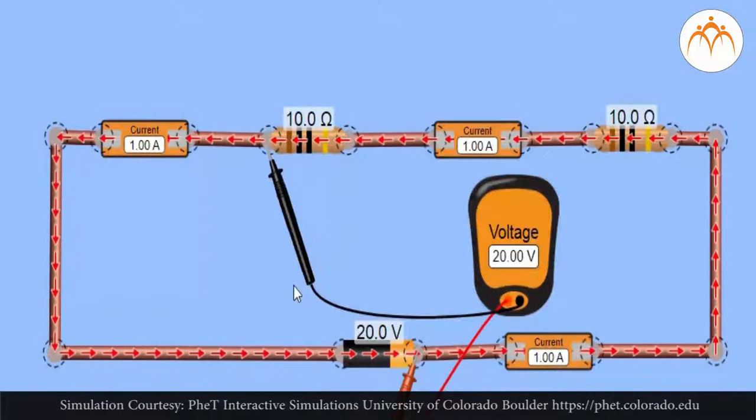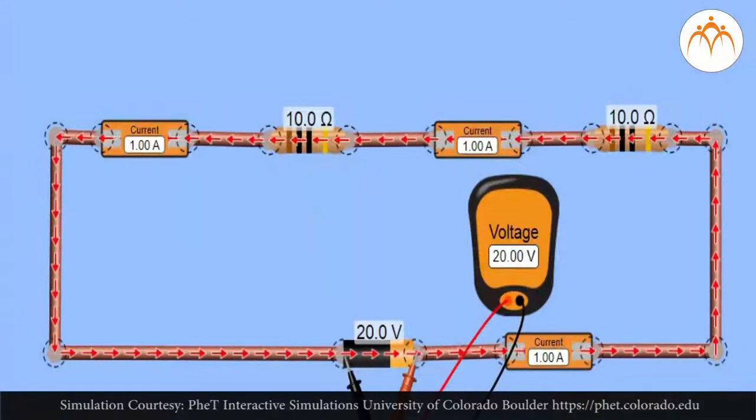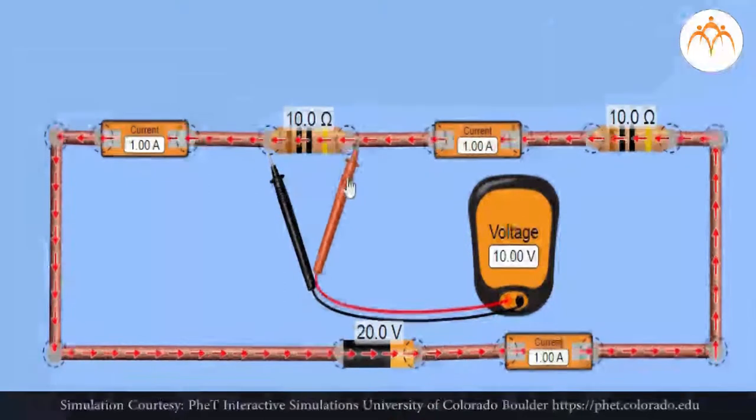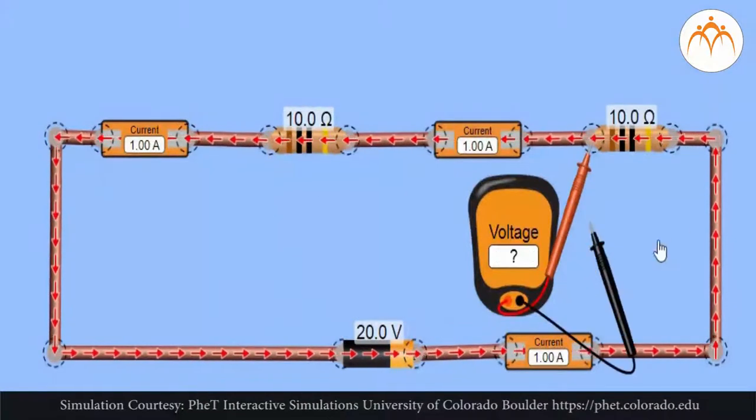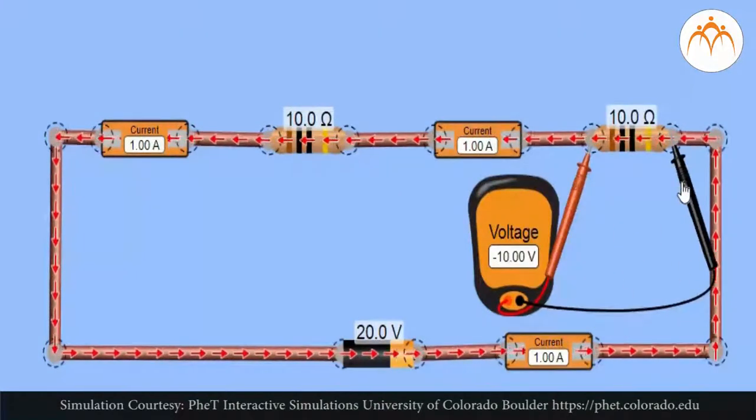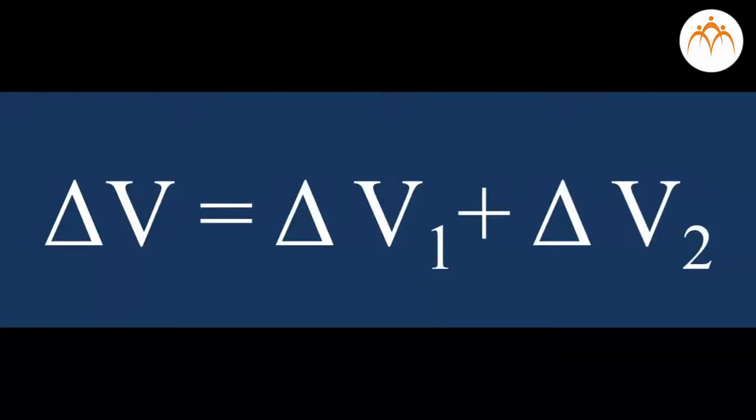If an electric circuit powered by a 20 volt cell is equipped with more than one resistor, then the cumulative loss of electric potential is 20 volts. There is a voltage drop for each resistor, but the sum of these voltage drops is 20 volts, the same as the voltage rating of the power supply. This concept can be expressed mathematically by delta V equals delta V1 plus delta V2.